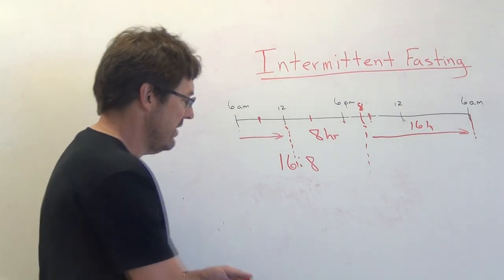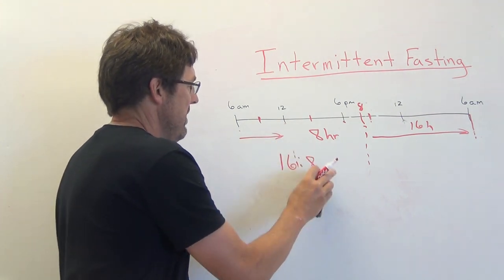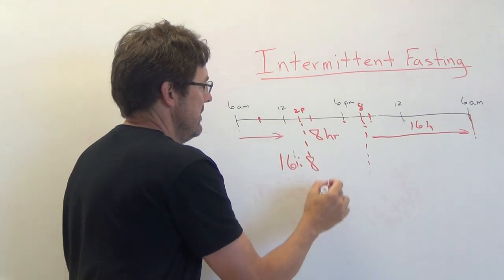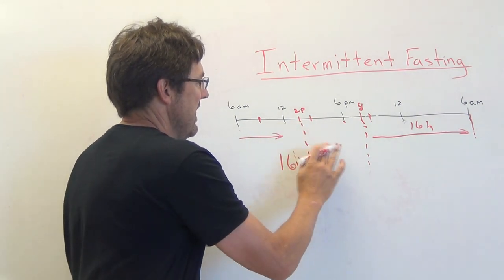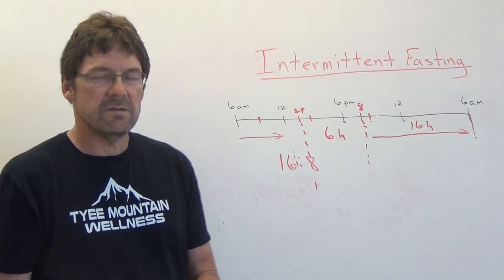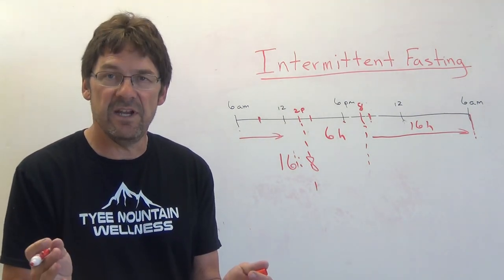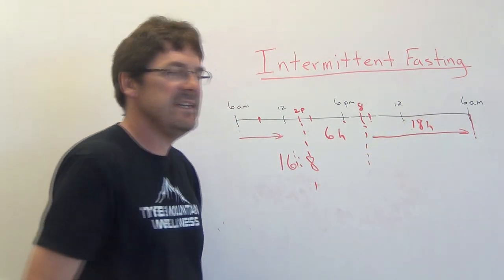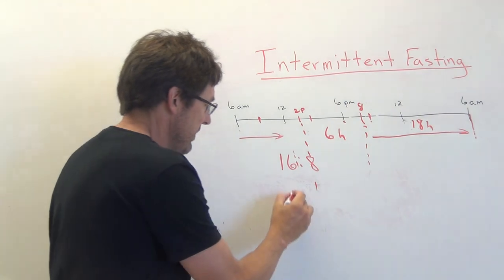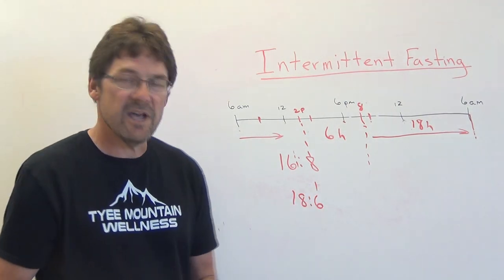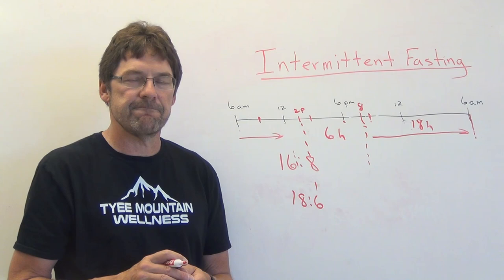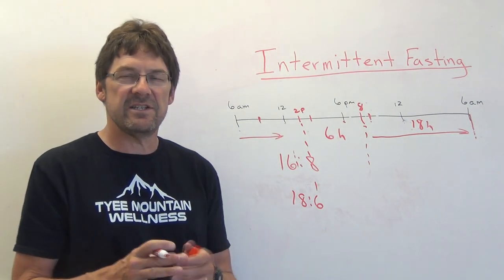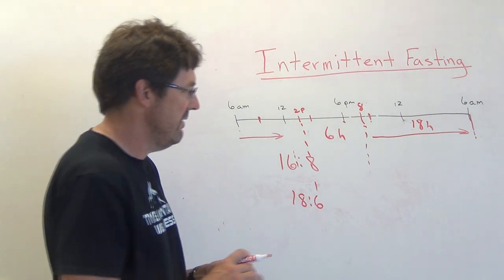Now often times, I will actually stretch this out. And maybe not start till 2 p.m. So now, I've actually got a 6 hour feeding schedule. And an 18 hour fasting schedule. That would be an 18-6. And that's been pretty successful for me. So, 16-8 is the most popular. It could be stretched out to be an 18-6. You can really do anything you want. That's the beauty of intermittent fasting.